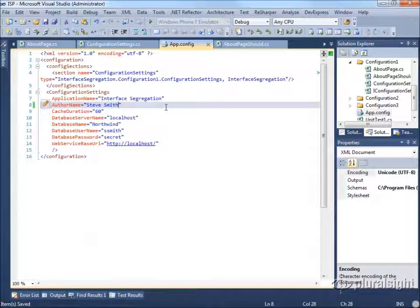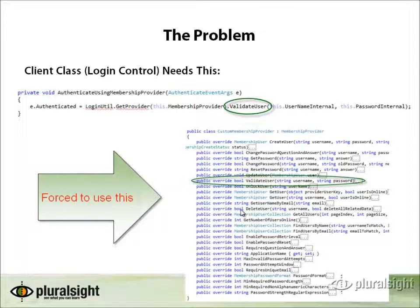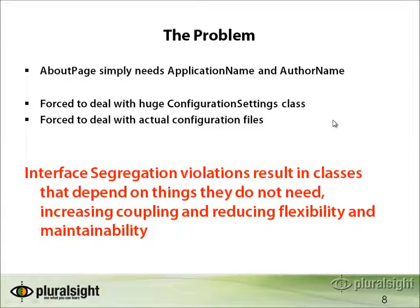The problem is that a client like the login control needs simply the ValidateUser method of the membership provider, but it's forced to use this massive MembershipProvider API — a fat interface with one thing it needs and 30 things it doesn't. Likewise, the AboutPage needs only an application name and author name, but is forced to deal with a ConfigurationSettings class with additional required properties it doesn't care about, and a dependency on configuration files when it really just cares about two strings. Interface segregation violations result in classes that depend on things they don't need, which increases coupling and reduces flexibility and maintainability.